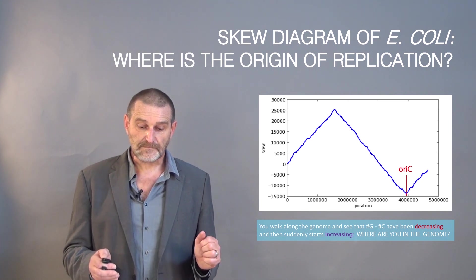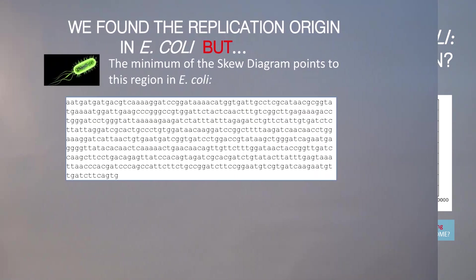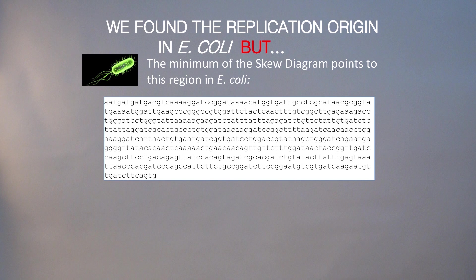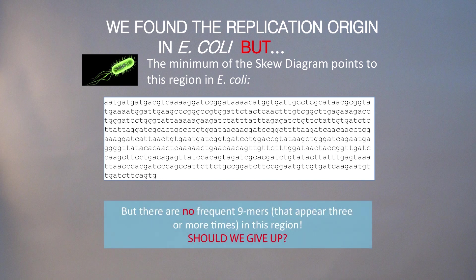Now let's try to find frequent words in this origin, and hopefully we will find DnaA boxes in this way. After we run our frequent words problem, unfortunately it turns out there are no frequent words that appear even three times in this replication origin. Which means that we failed.